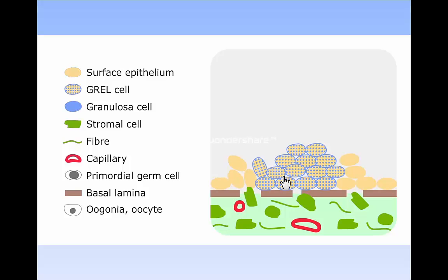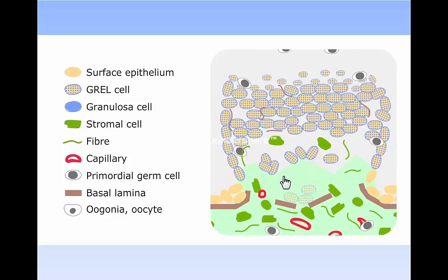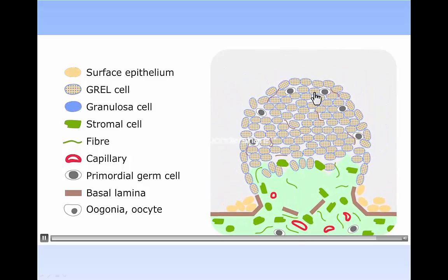The GREL cells continue to proliferate, and primordial germ cells originating from the yolk sac migrate into the developing ovary and replicate as oogonia between the proliferating GREL cells. At this stage, you will note there is not a proper surface epithelium on the ovary, except at its base.